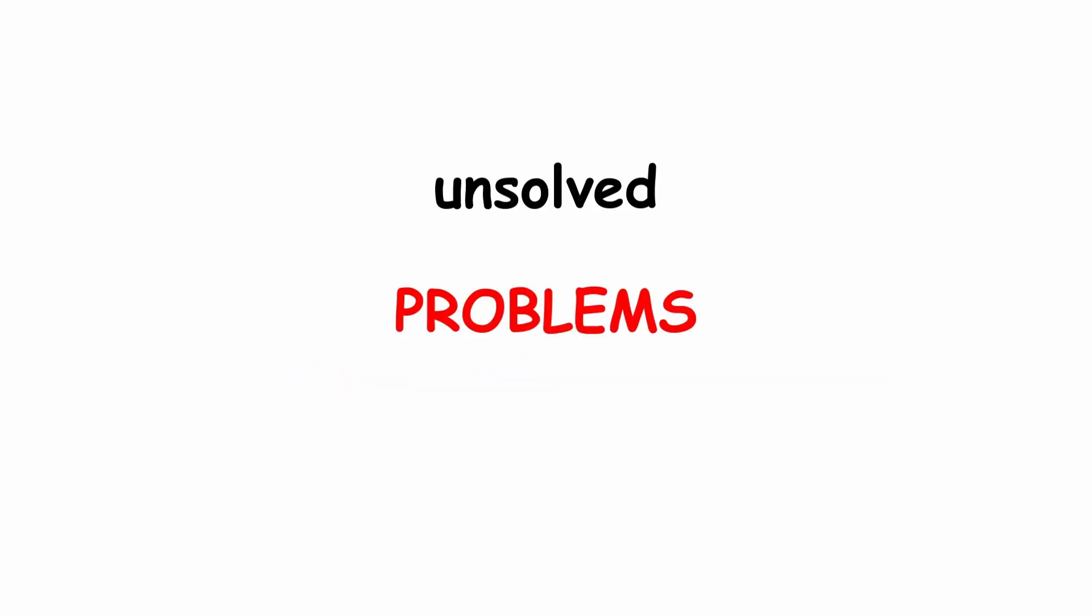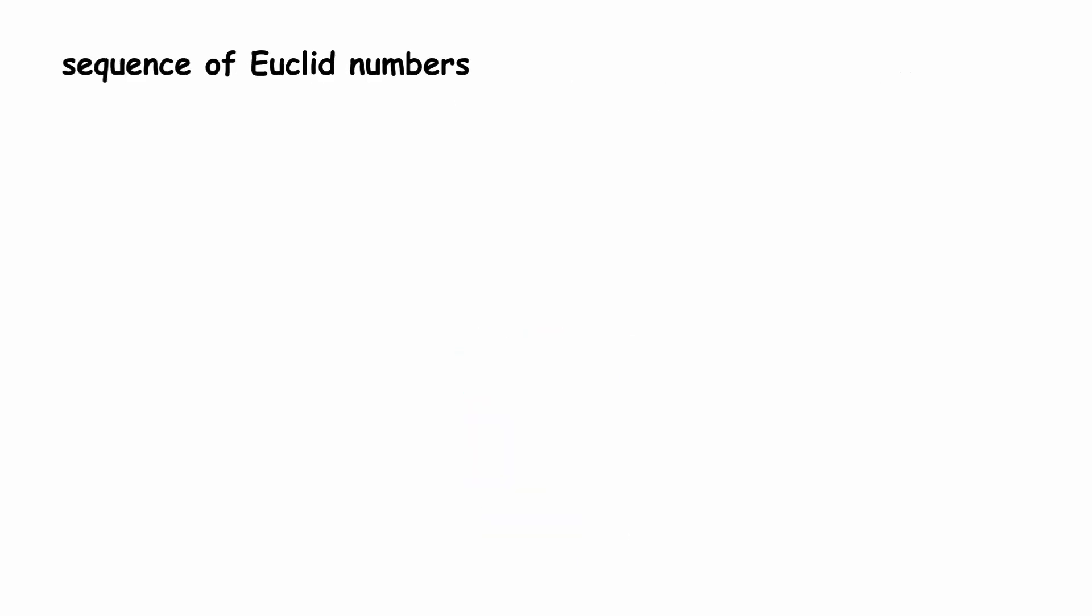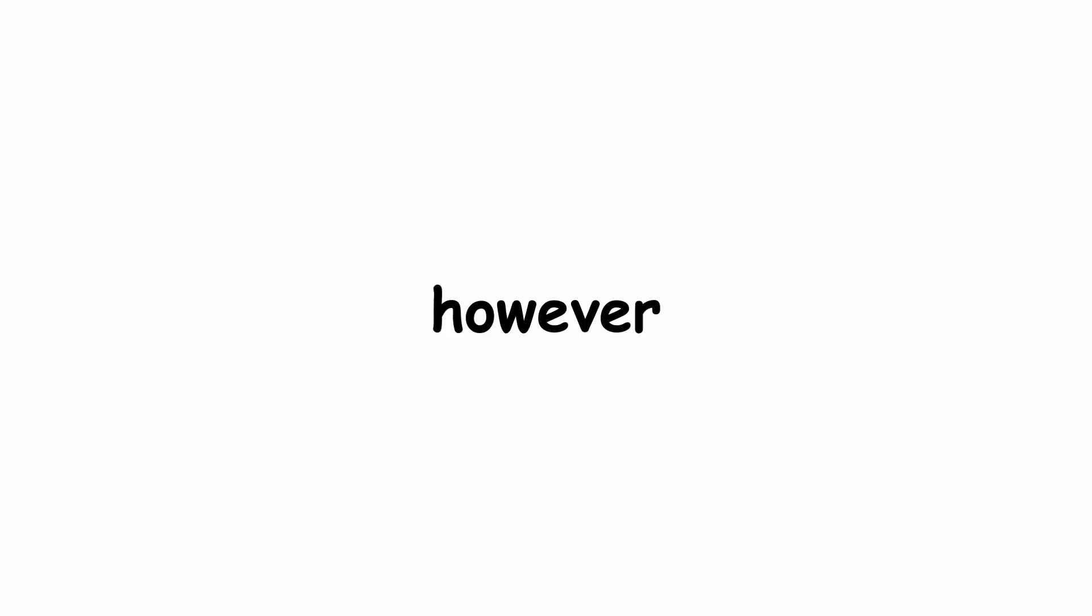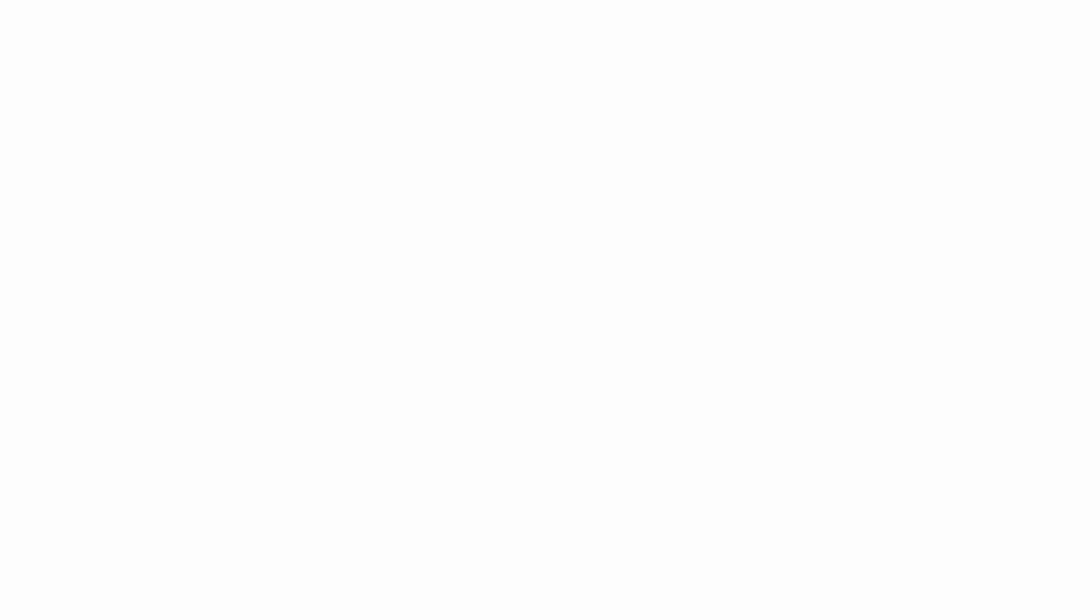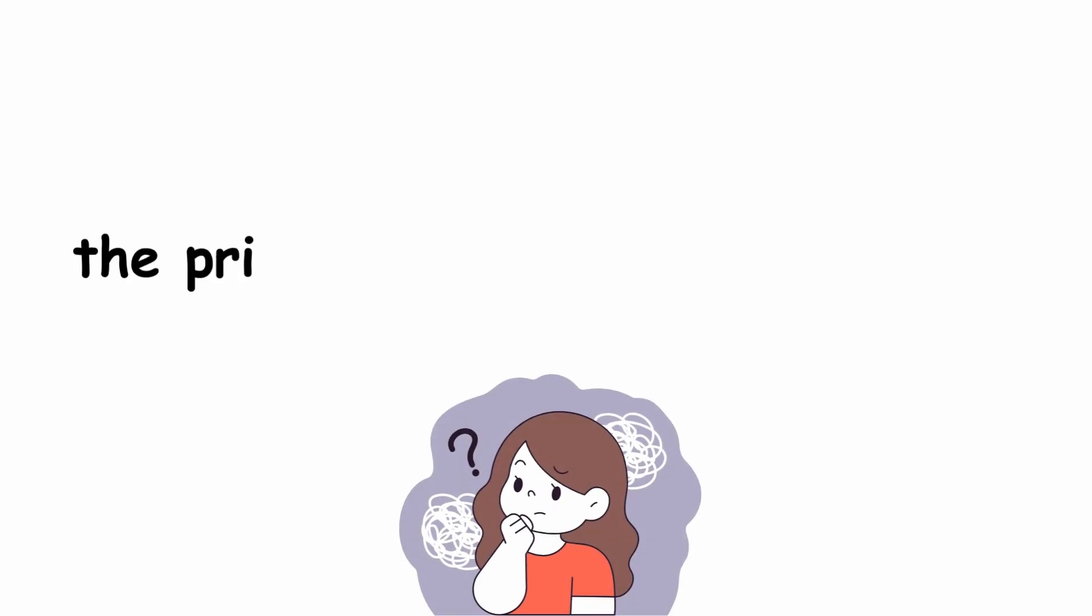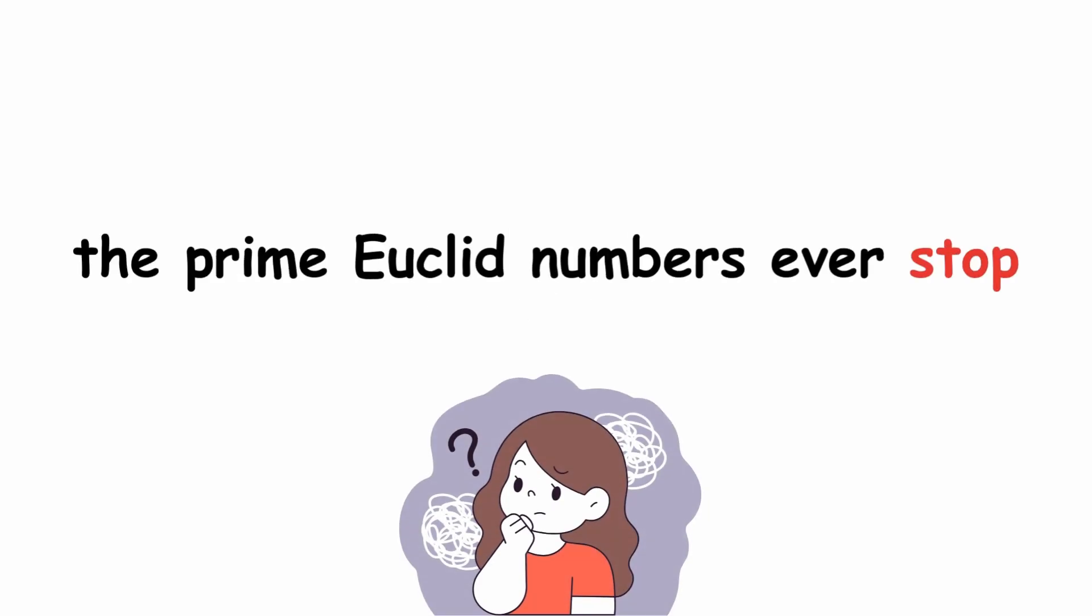Now, for the first of the unsolved problems. Are there infinitely many prime Euclid numbers? The sequence of Euclid numbers starts with 3, 7, 11, 211, and 2311, which are all prime numbers. However, this is followed by a string of 5 composite Euclid numbers in a row. The first of which is E6 equals 30,031, which is 59 times 509. As of now, it is unknown whether the prime Euclid numbers ever stop.